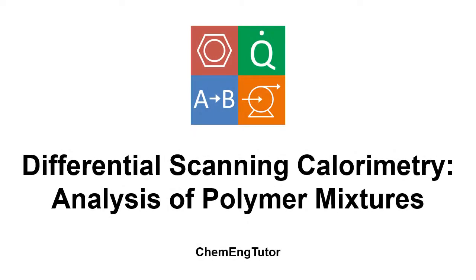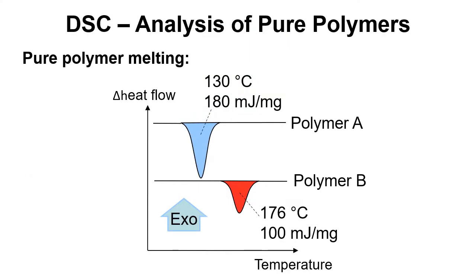In this video we're going to take a look at data analysis of polymer mixtures using DSC. The first thing we need to do is analyze the pure polymers. In this example we've got polymer A and polymer B — they've been heated up with the DSC and the results recorded. Polymer A has a melting enthalpy of 180 millijoules per milligram and melts at 130 degrees. Polymer B requires 100 millijoules per milligram to melt and it melts at 176 degrees.